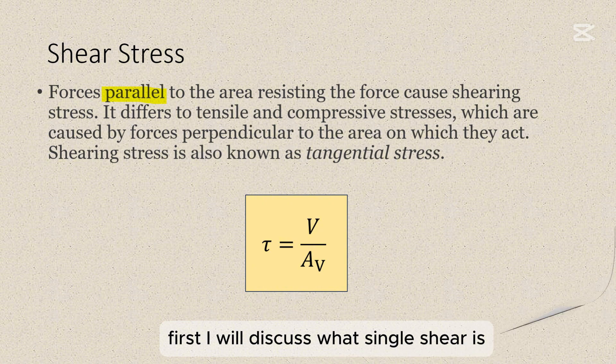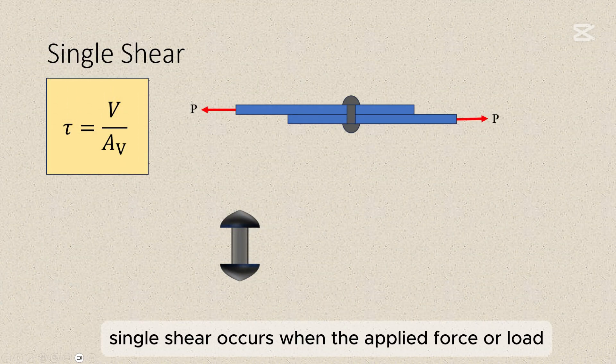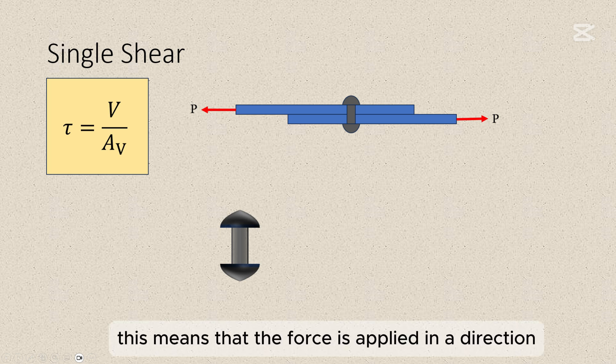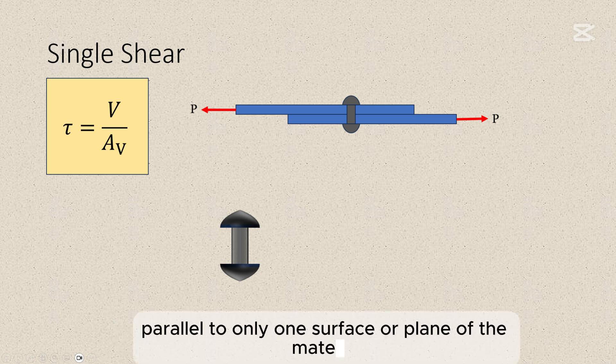First, I will discuss what single shear is. Single shear occurs when the applied force or load acts on a single plane within the material, causing it to deform or fail along that plane. This means that the force is applied in a direction parallel to only one surface or plane of the material.